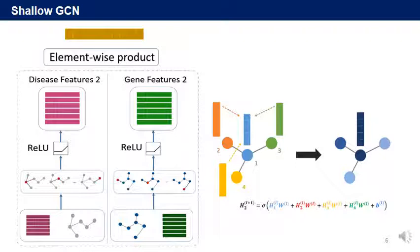In the shallow model, a single GCN operation is performed. Then we perform an element-wise product of a pair of output features. For reference, GCN performs the following computational process: each feature multiplies with a common weight matrix and provides its value to the adjacent node.